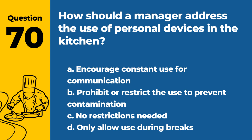Question 70. How should a manager address the use of personal devices in the kitchen? A. Encourage constant use for communication. B. Prohibit or restrict the use to prevent contamination. C. No restrictions needed. D. Only allow use during breaks. Answer: B. Personal devices can be a source of contamination and should be restricted or prohibited in food preparation areas.